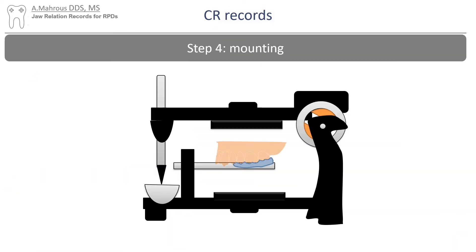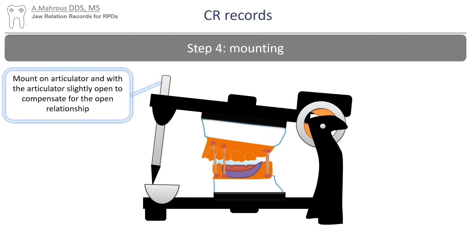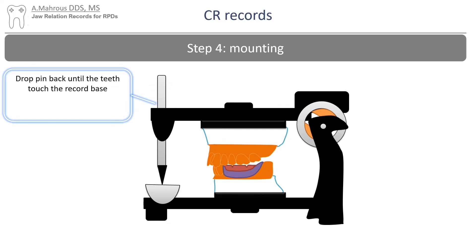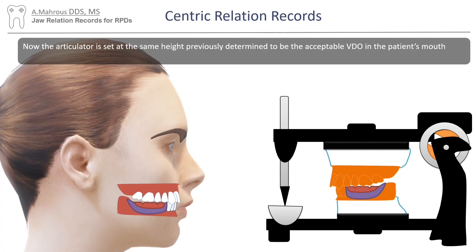Once the material is set, we can go back to our articulator where the maxillary arch is mounted using a facebow record. To compensate for the open position during CR records, it is often indicated to prop the articulator open to compensate for that distance. Once the stone has set, the occlusal registration material can be removed and the pin can be dropped back down. Now you'd have mounted casts that represent the vertical height determined during the patient's appointment.